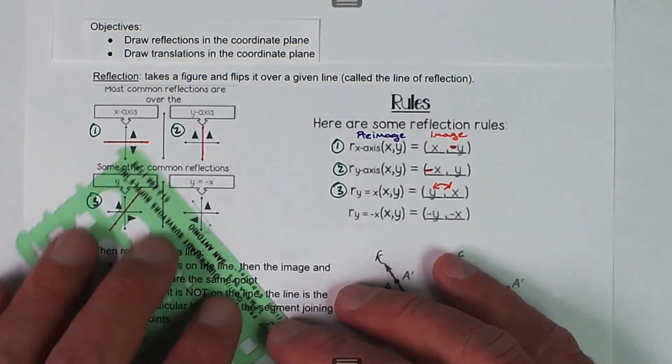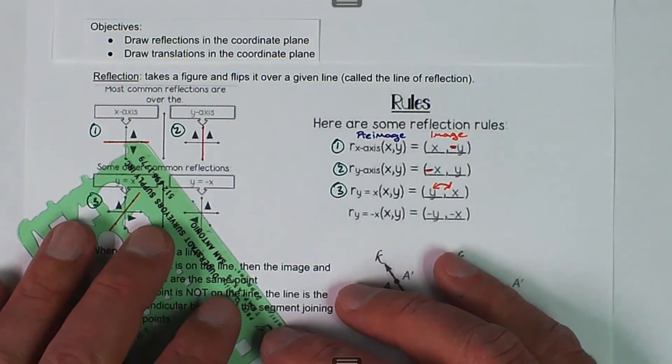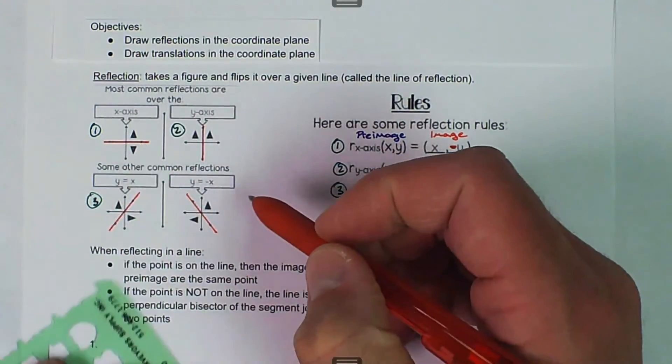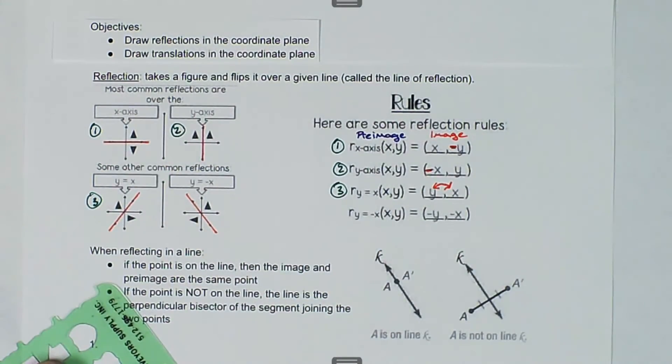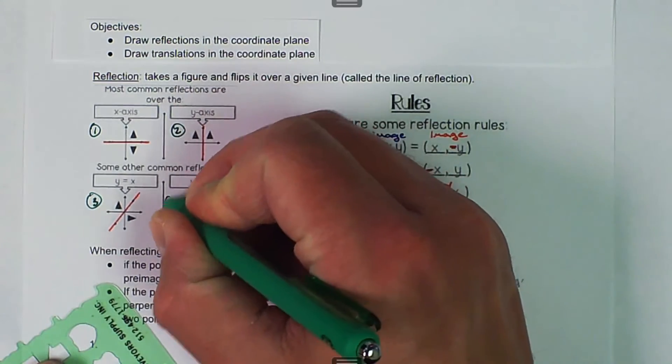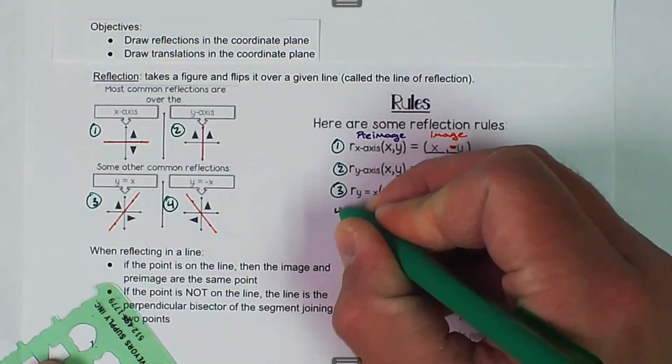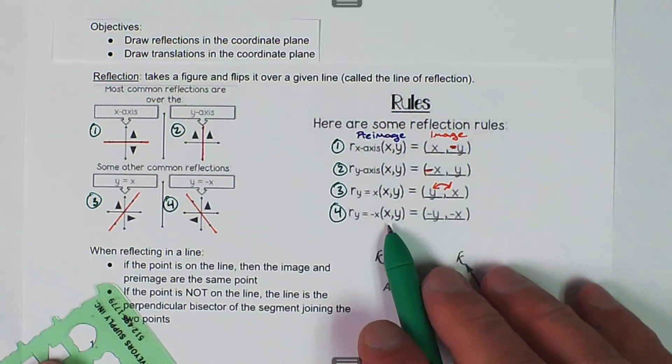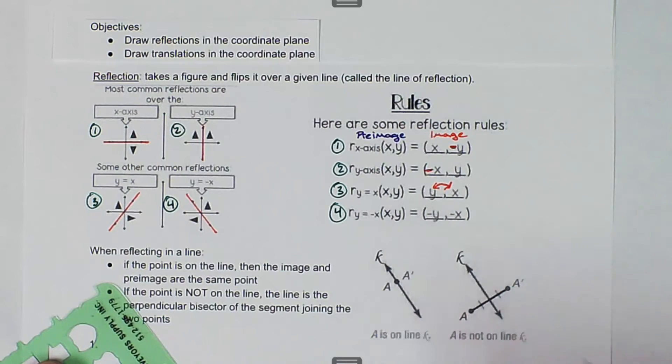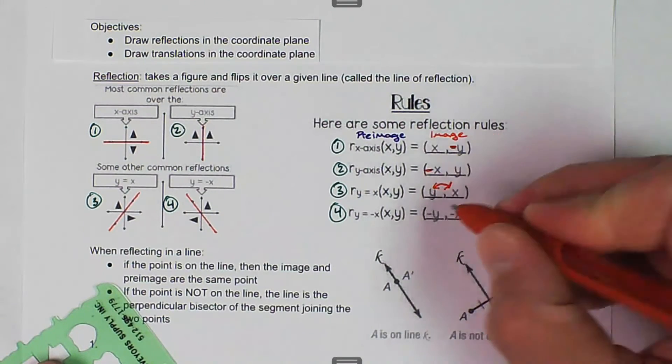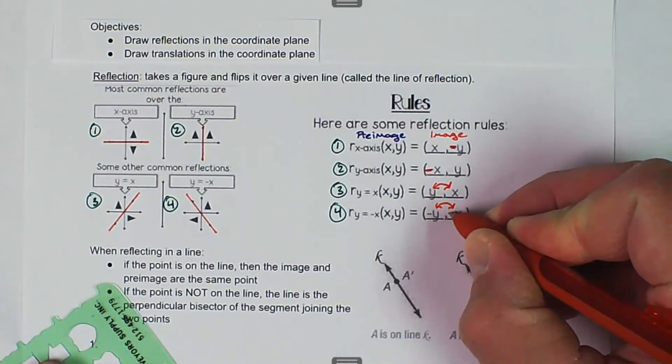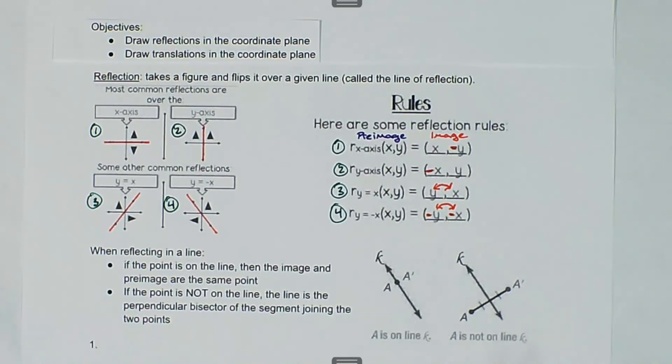The last one we have is y equals negative x. That line looks like this, has a negative slope. Our coordinate rule for that one is not only do our x and y switch, but also we have negative values there. So x and y switch locations and we add that negative on for both of them.